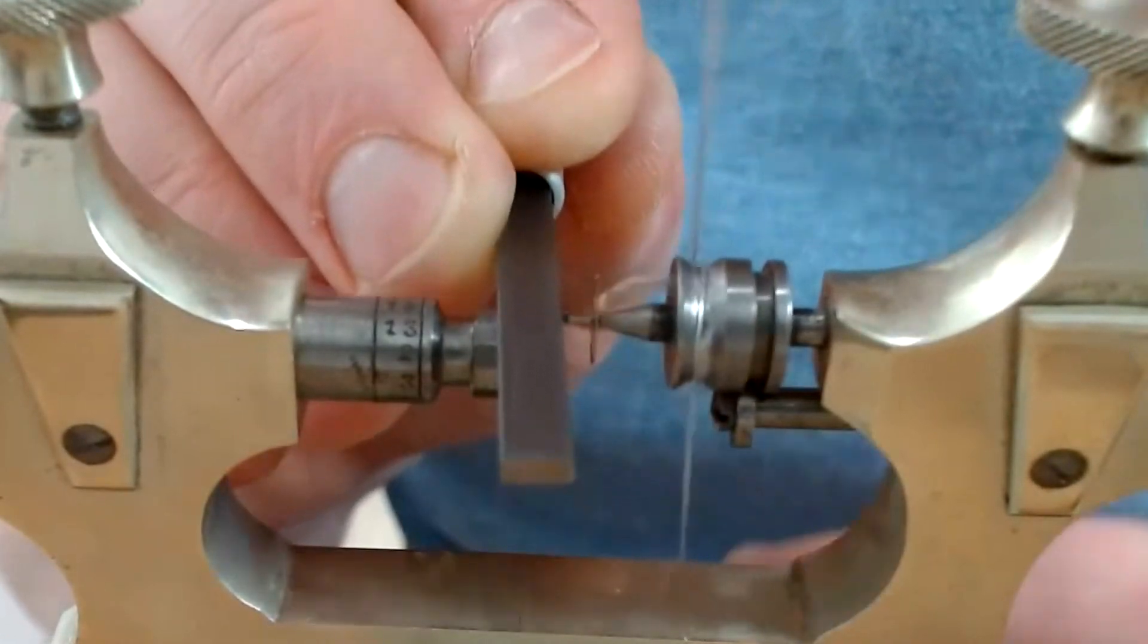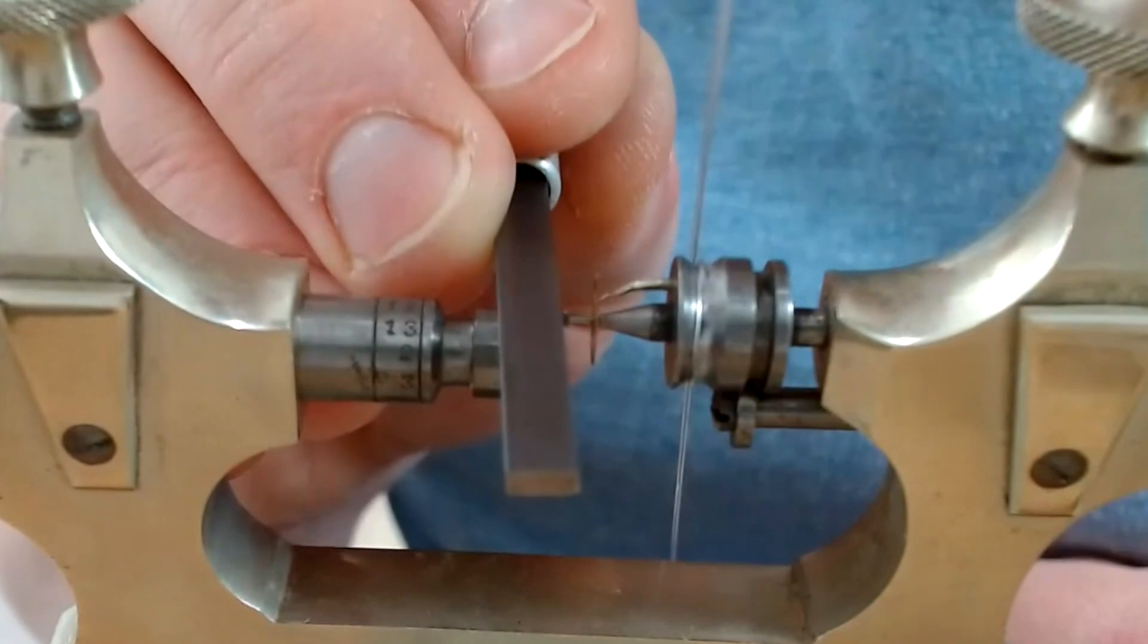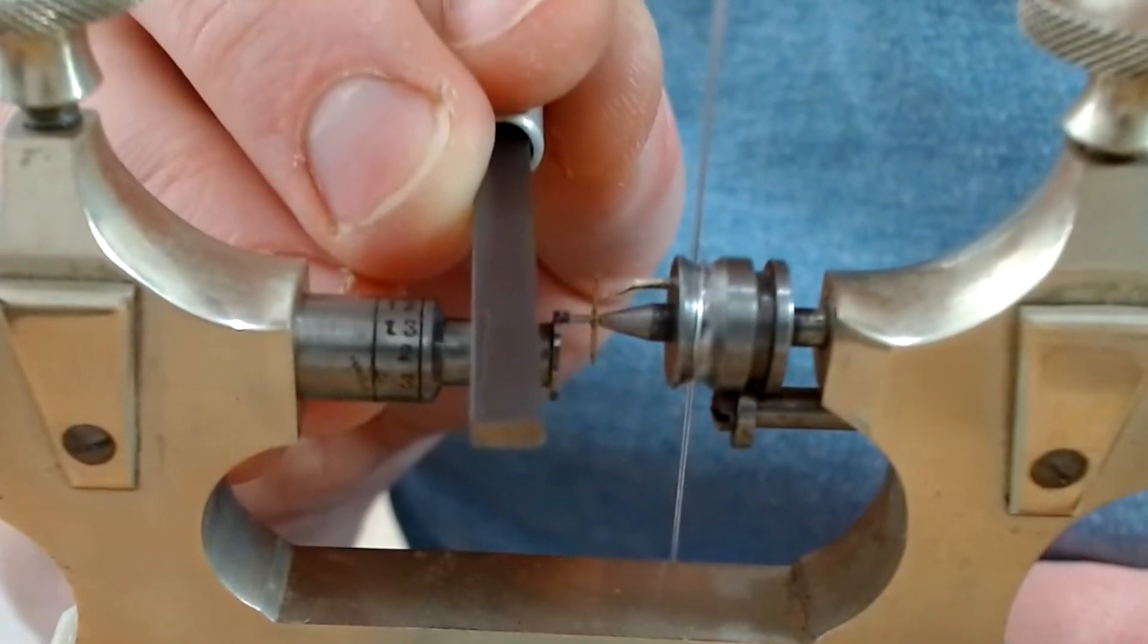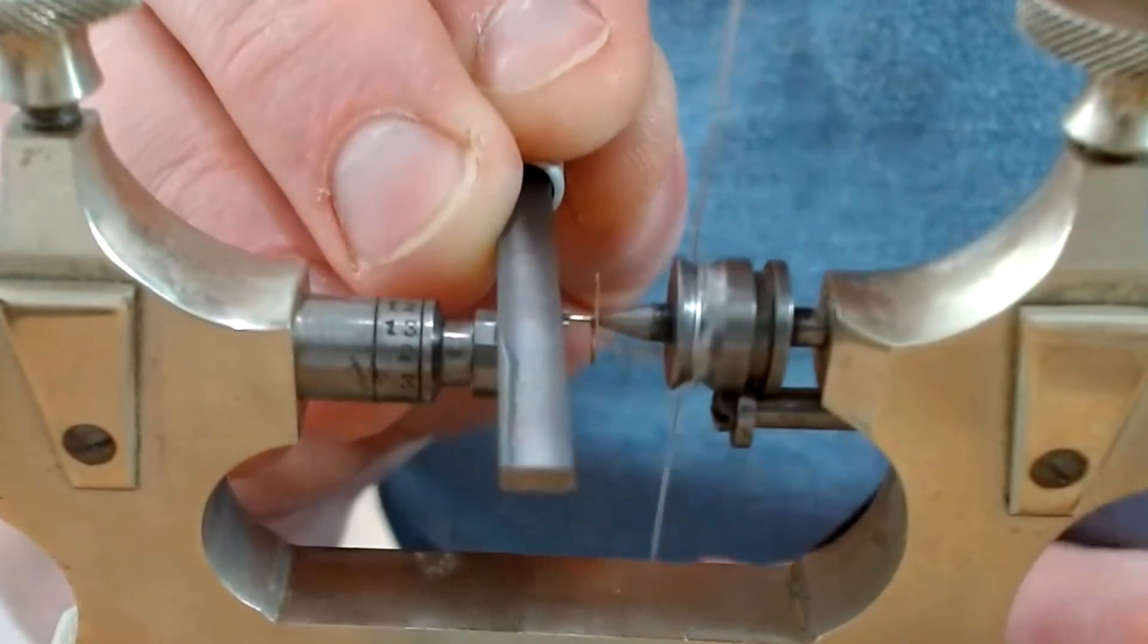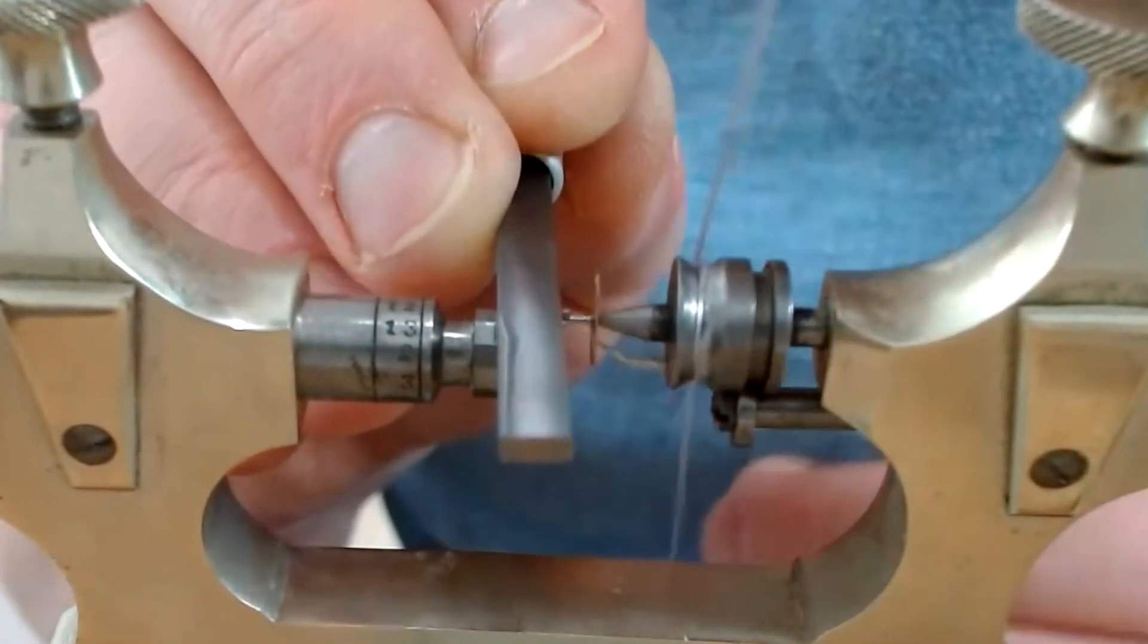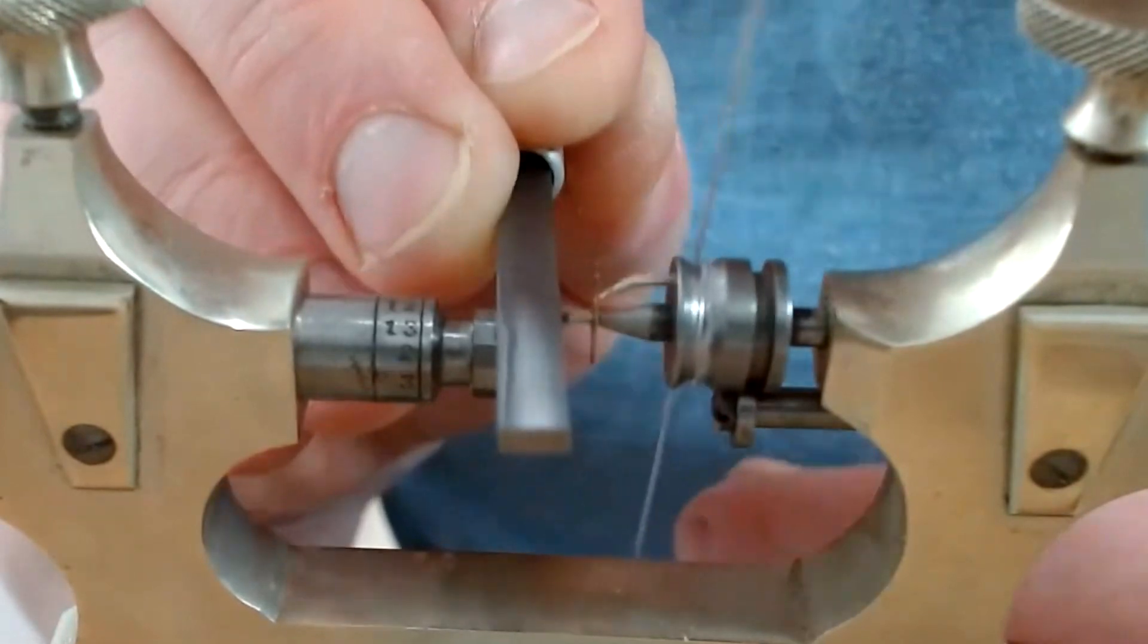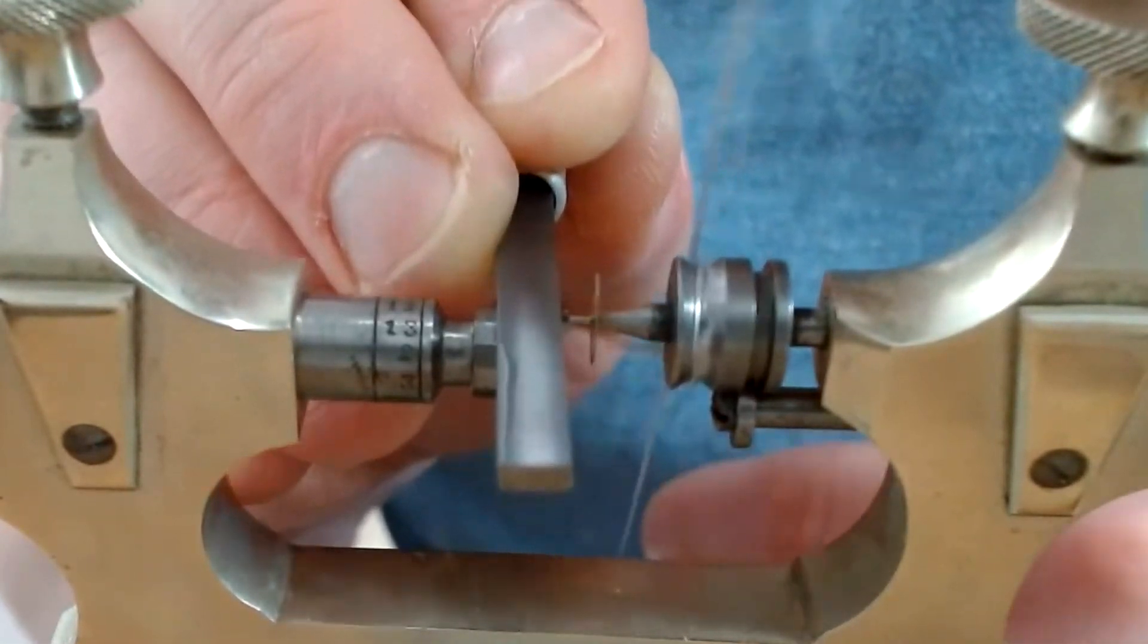Now we want to make sure the burnisher is nice and tight up against the shoulder of the pivot so that we get a nice clean line in there. We don't want rounded corners, we want nice sharp corners. So we continue to move back and forth with our burnisher and back and forth with our bow.